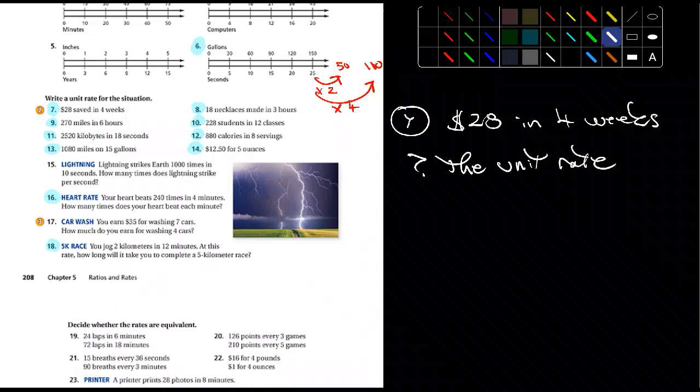24 divided by 4? Yeah. Not 24, but 28 divided by 4. And most of you should know that off the top of your head. It's 7. So, it's $28 in four weeks. So, it's $7 per week. So, there's your answer to number 7.